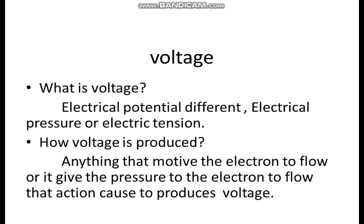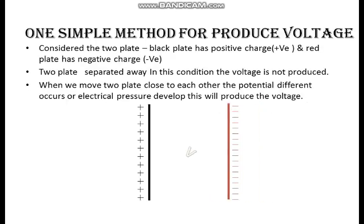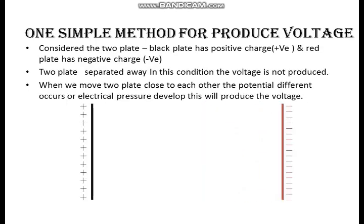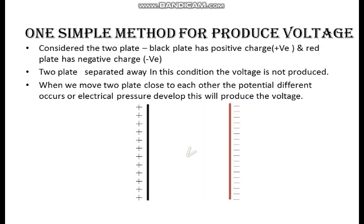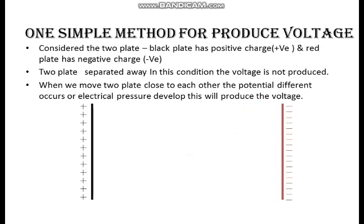Second, we are going to see how the voltage is produced. Anything that motivates the electron to flow, or gives the pressure to the electron to flow — that action causes the production of voltage. I am going to explain what is voltage with a simple example.